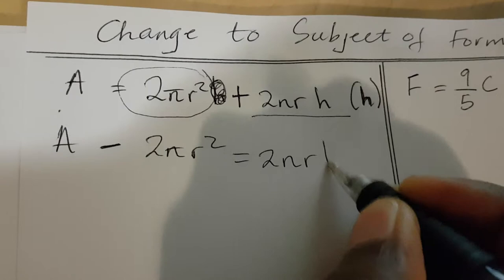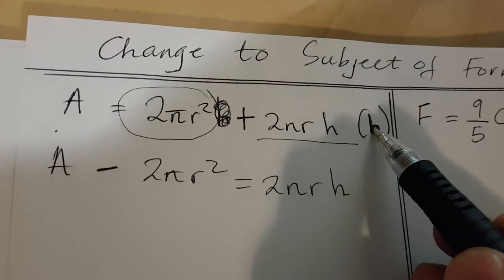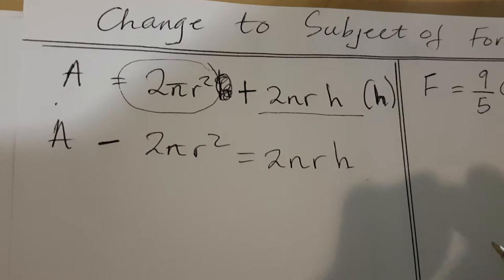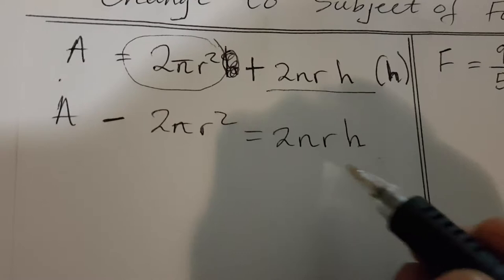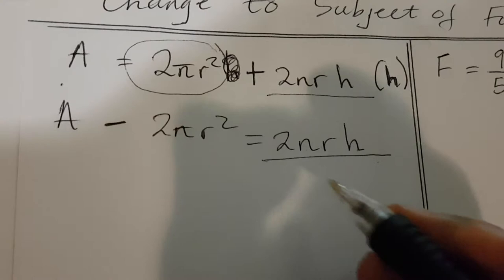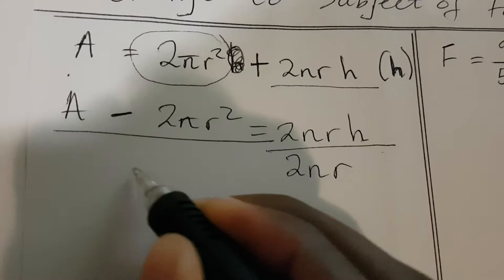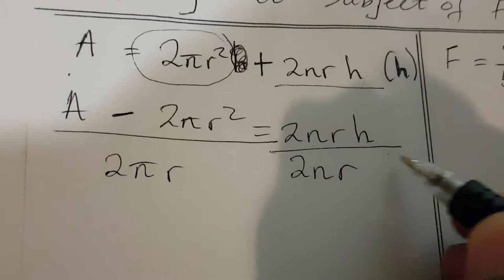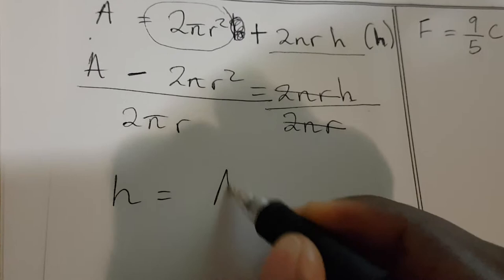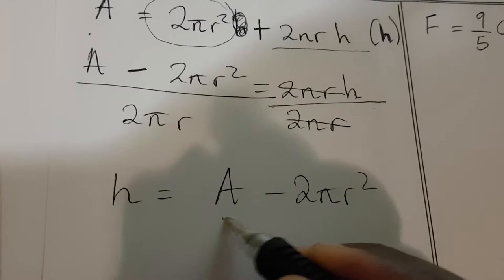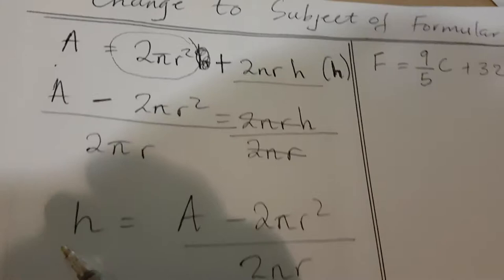...2πrh. We are solving for h, so we need to divide both sides by the variables next to h. In our situation, 2πr is next to h, so we divide both sides by 2πr. The 2πr on the right cancels, so h = (A − 2πr²) / (2πr).